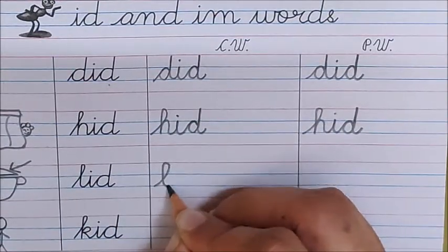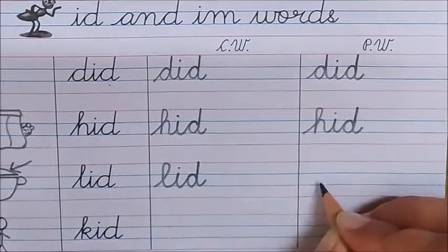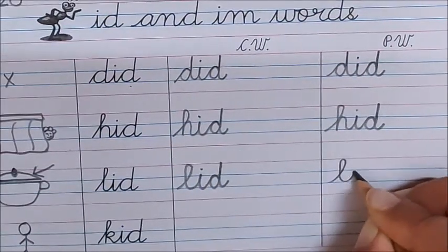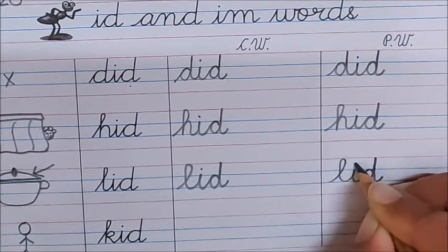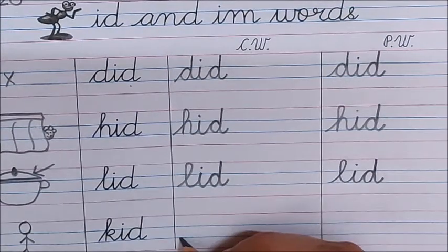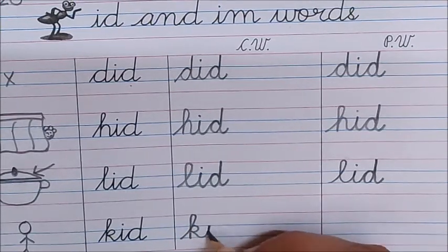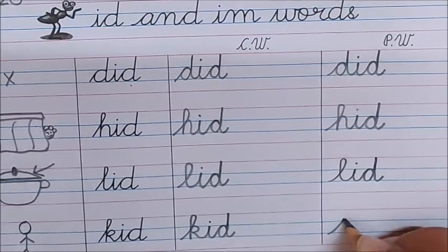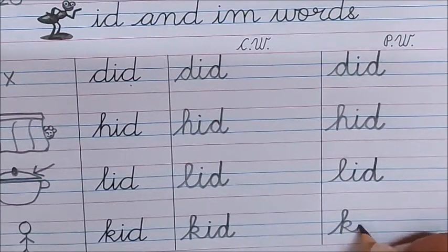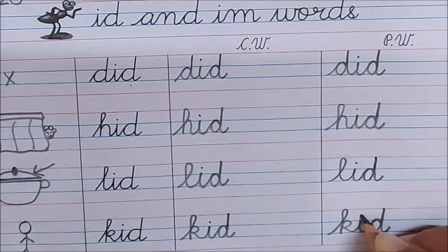Now, the next word, lid. L, i, d. L, i, d. Lid. Next word, kid. K, i, d. Kid. K, i, d. Kid.